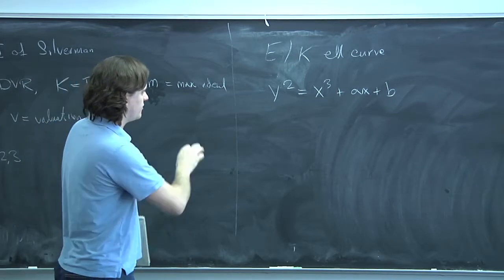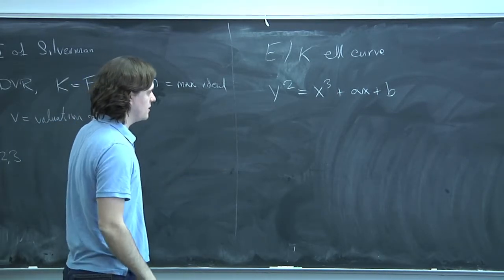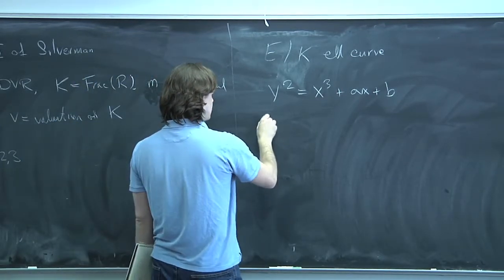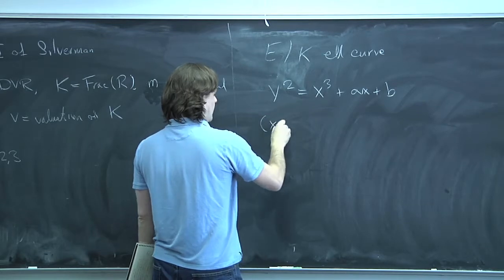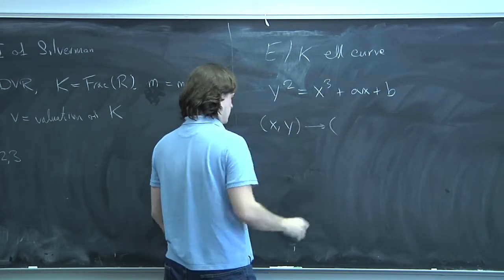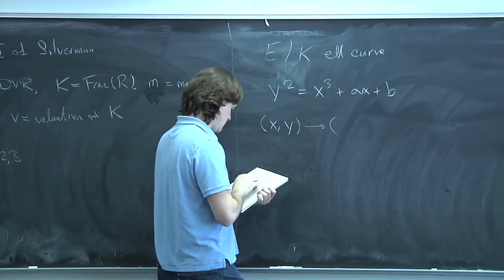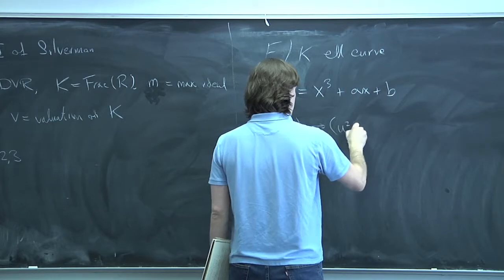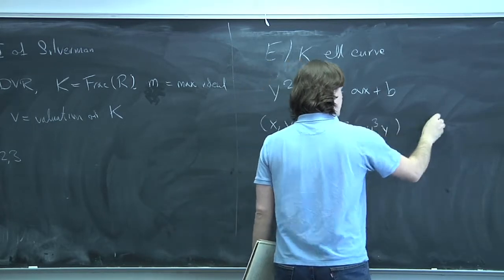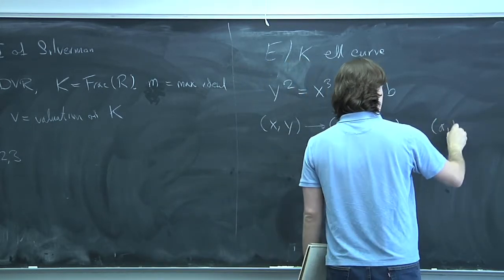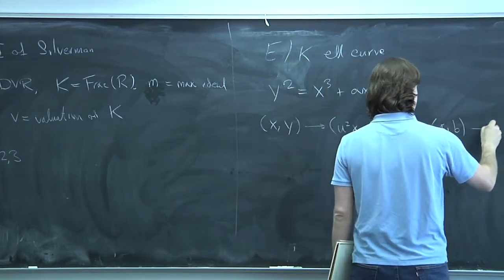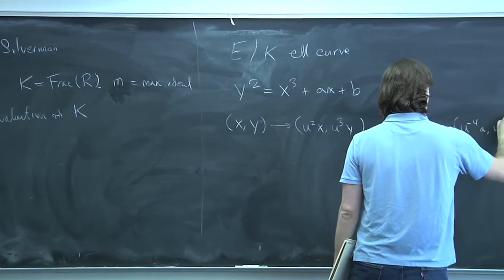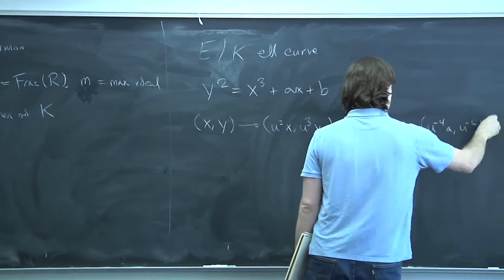If you make the change of variables (x, y) → (u²x, u³y), then that's going to change the equation: a gets changed to u⁻⁴a, b gets changed to u⁻⁶b.